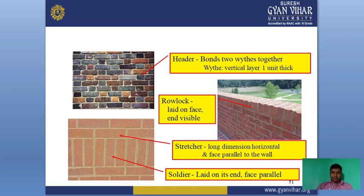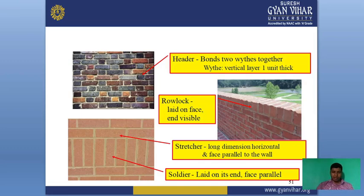When we are making any layer, the longest side is placed facing forward — that type is called a stretcher. Then there is header and soldier. These three types of bricks are used whenever we are constructing a wall, so that there is a proper bonding between the bricks, the appearance is good, the texture is good, and our wall remains parallel and straight.